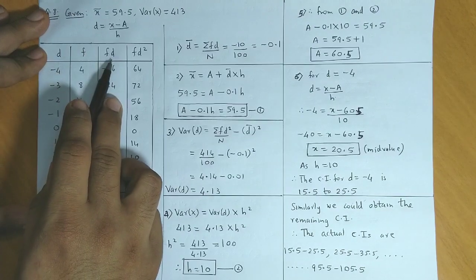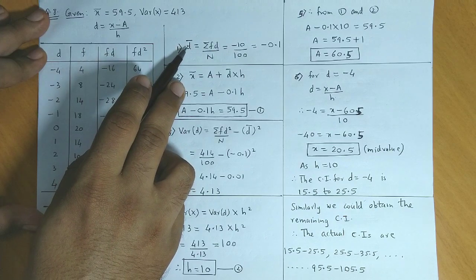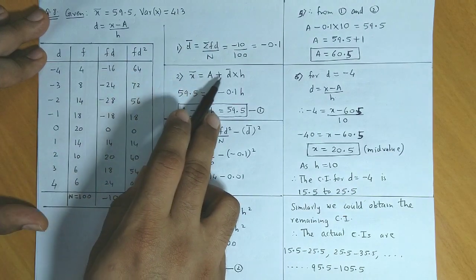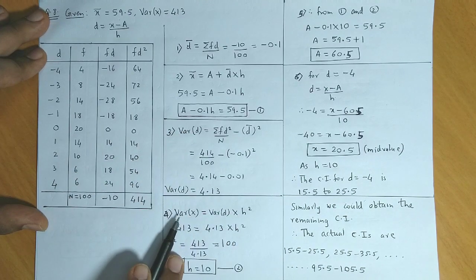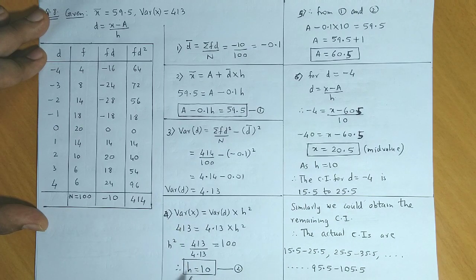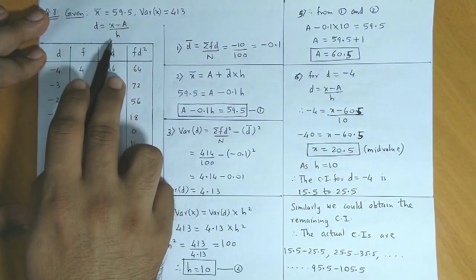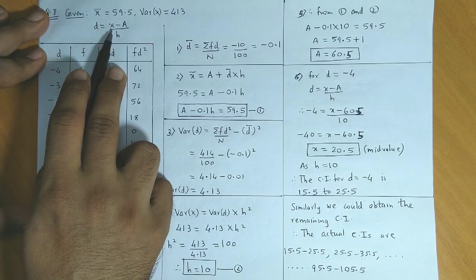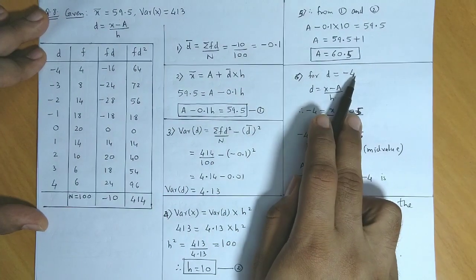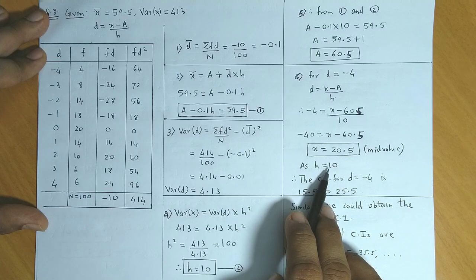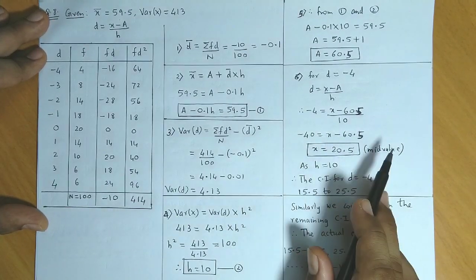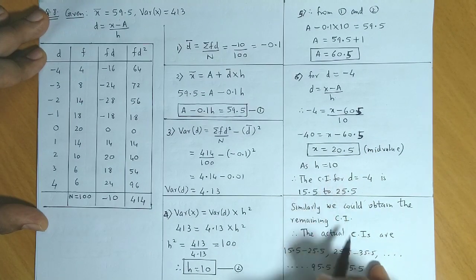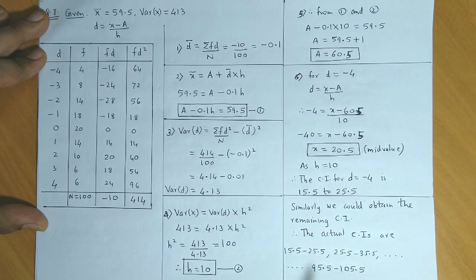Remember, here d is given, f is given, you need to find fd and fd squared. First step: calculate d̄. From d̄ we use x̄ equals a plus d̄ times h to get equation one. Then variance of d times h squared equals variance of x, from which you obtain h. Substitute into equation one to get a. Once we have a and h, using the values of d we can obtain the mid values. At d equals minus 4, we got mid value 20.5. Since the height is 10, subtract and add 5 to get 15.5 as lower limit and 25.5 as upper limit. Similarly find the remaining class intervals: 15.5 to 25.5 up to 95.5 to 105.5.